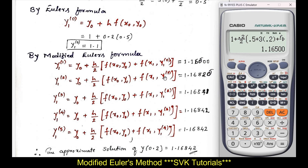Similarly, substitute y₁⁽¹⁾ into the expression by pressing equal again. The calculator retains the ready-made equation, and I get 1.16825. Pressing equal again gives 1.16841. Pressing equal once more gives 1.16842. One more press gives the same value, so the iterations have converged. The approximate solution for y(0.2) is 1.16842.